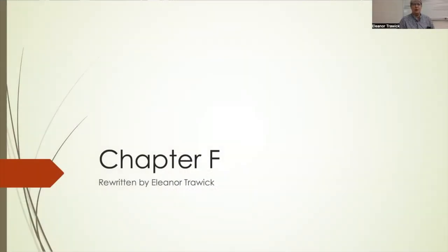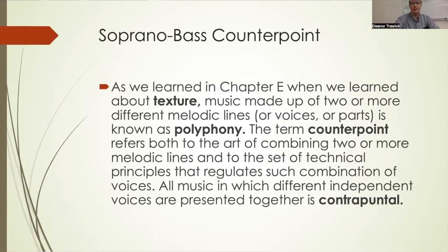Chapter F begins to deal with counterpoint, with the art of combining independent lines of music to make an aesthetically pleasing musical texture. As we learned in Chapter E when we learned about texture, music that is made up of two or more different melodic lines, or two or more different voices or parts, is known as polyphony. The term counterpoint refers both to the art of combining two or more melodic lines and to the set of technical principles that regulate such combination of voices. All music in which different independent voices are presented together is contrapuntal music, or is counterpoint.